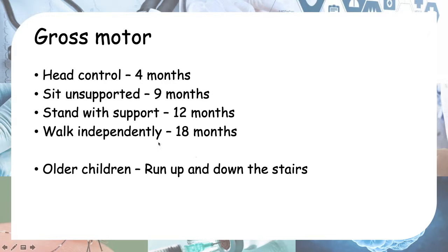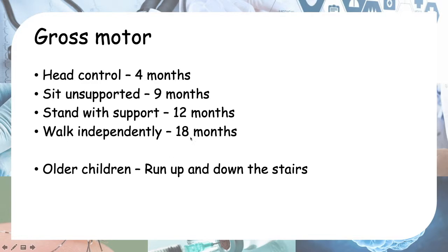For older children, say three or four years and above, you can ask whether the child can run up and down the stairs. You ask questions appropriate to the child's age — if the child is about three months you ask about head control only. If the child is nine months, ask about head control and sitting unsupported. If the child is six or seven years old, the earlier milestones are obviously already achieved.